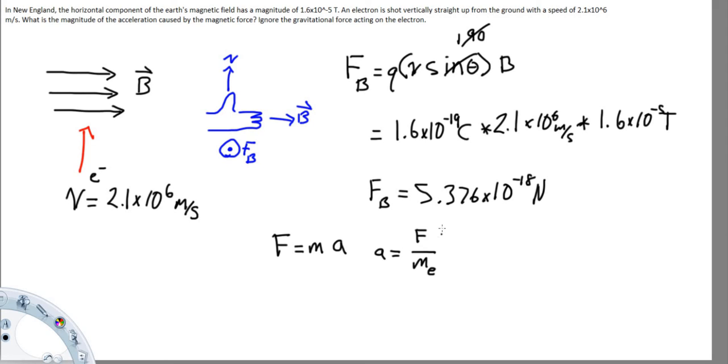So it will be 5.376 times 10 to the negative 18 newtons divided by, and you should be provided this number or you can just search for it, the mass of an electron is...